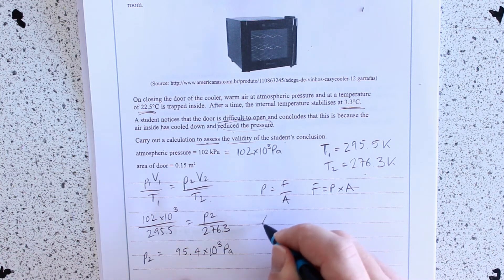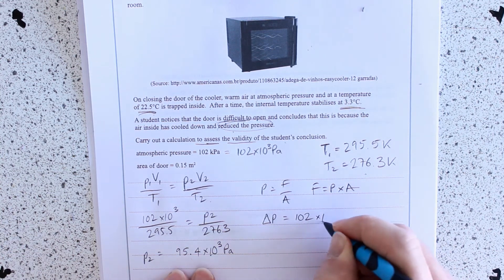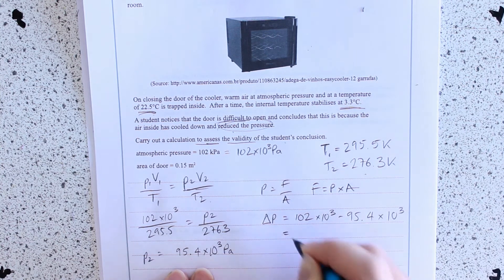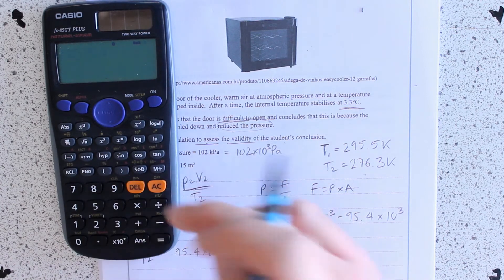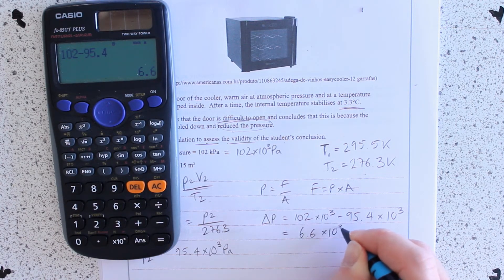So what's, if you like, delta P? 6.6 times 10 to the 3.